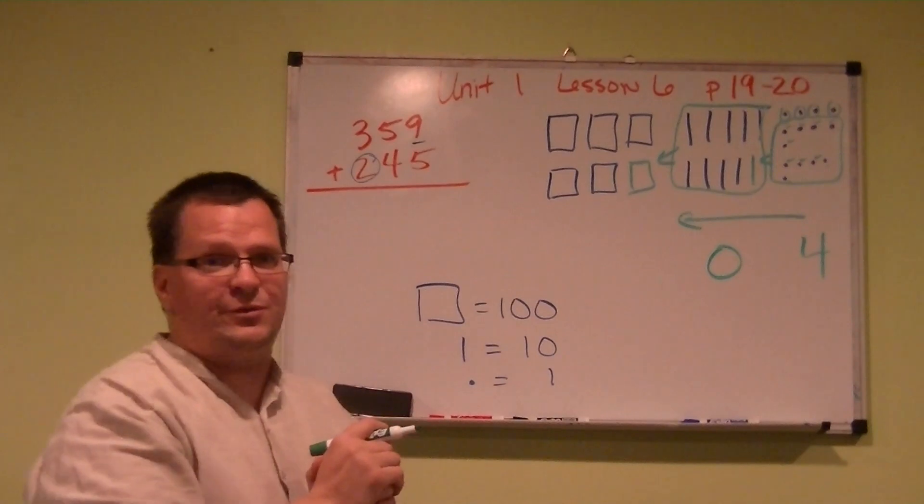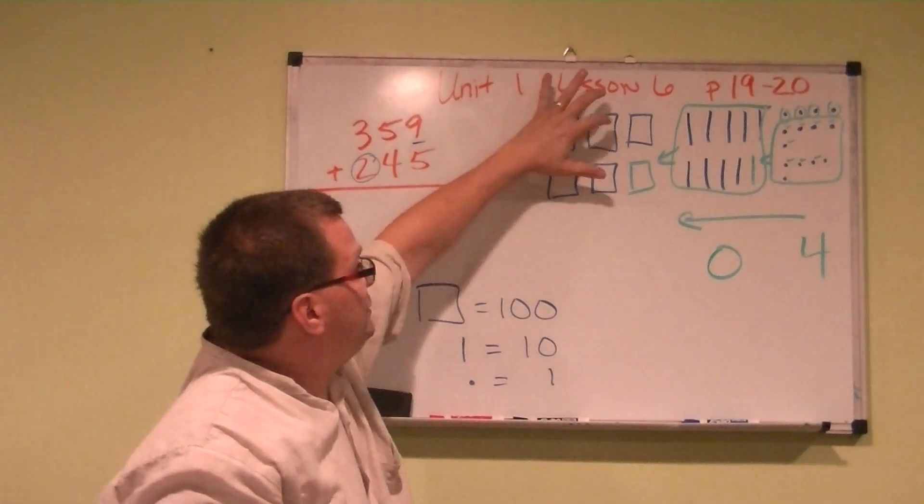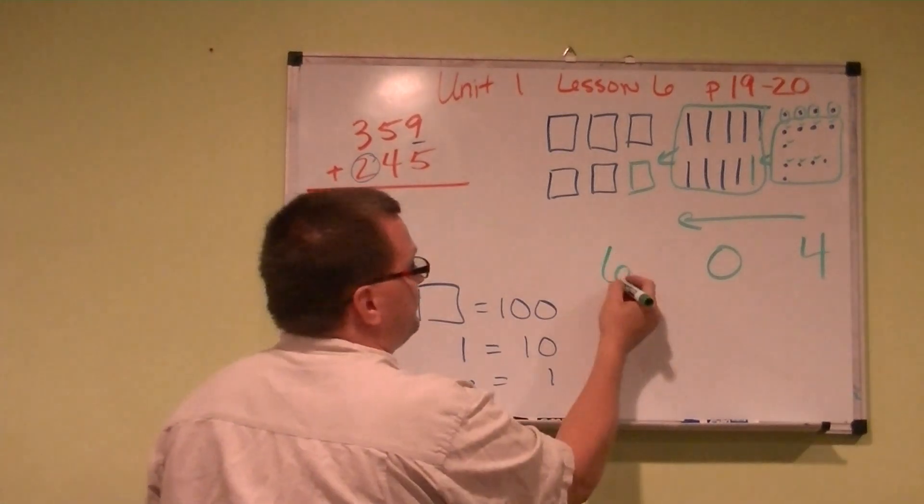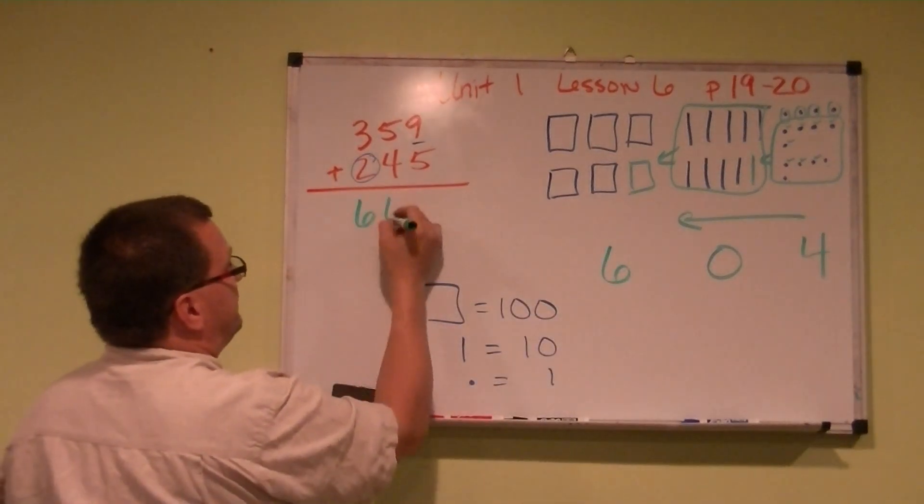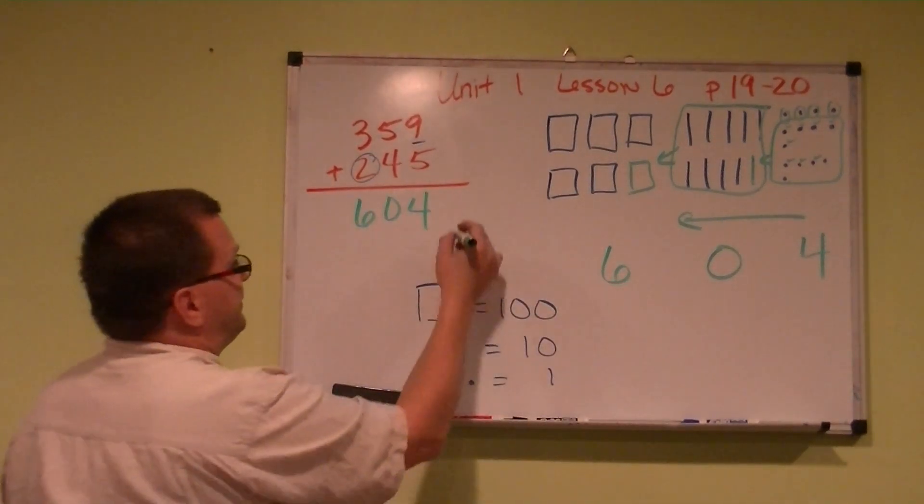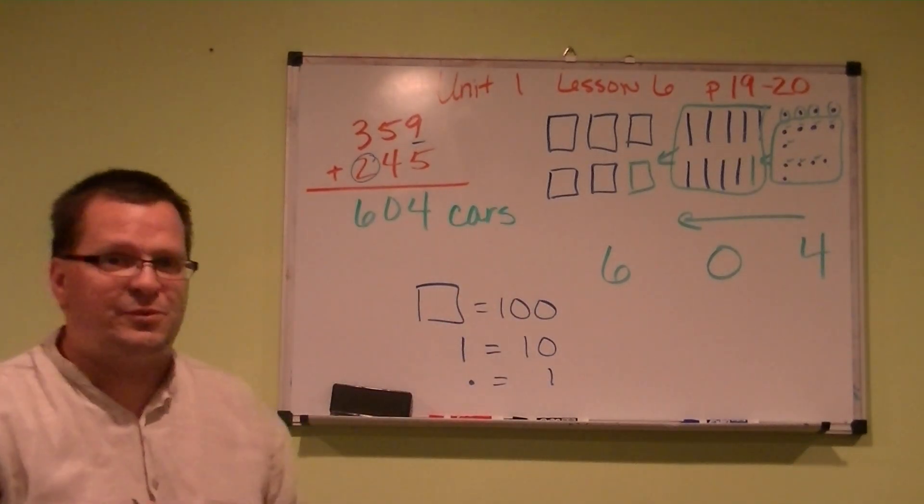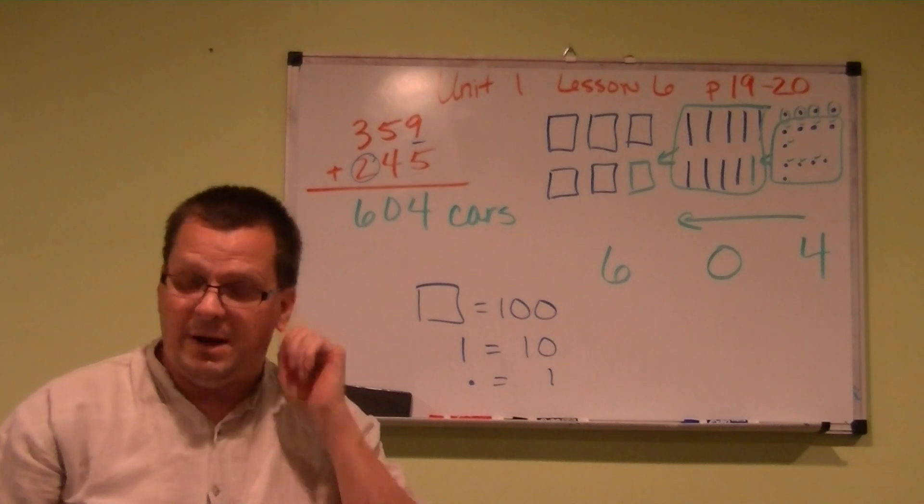Then how many hundreds do we have? 1, 2, 3, 4, 5, 6. So your answer would be 6, 0, 4. And this is cars. That's how you use the proof method to solve your problem.